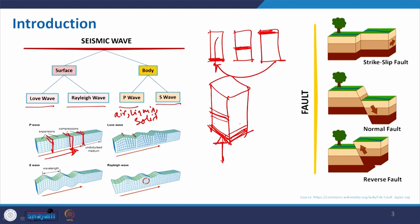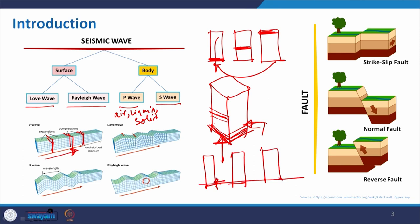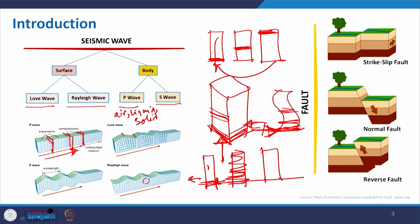Coming to the S wave — instead of hammering from the bottom, if you hammer from the side, the bottom portion tries to move in that direction while the upper portion tries to remain static. Then it adjusts and the upper portion moves. The motion becomes something like a rectangle. When there is an earthquake, the stress applied tries to move the structure while inertia tries to keep it; then when the load is released, it moves up. That is how the S wave becomes active.